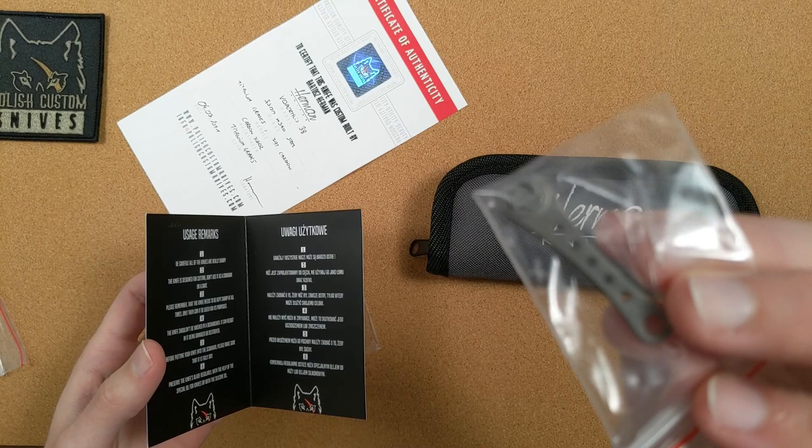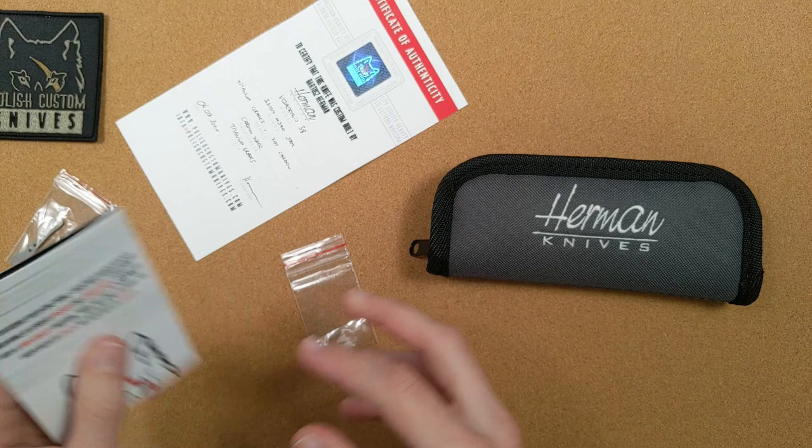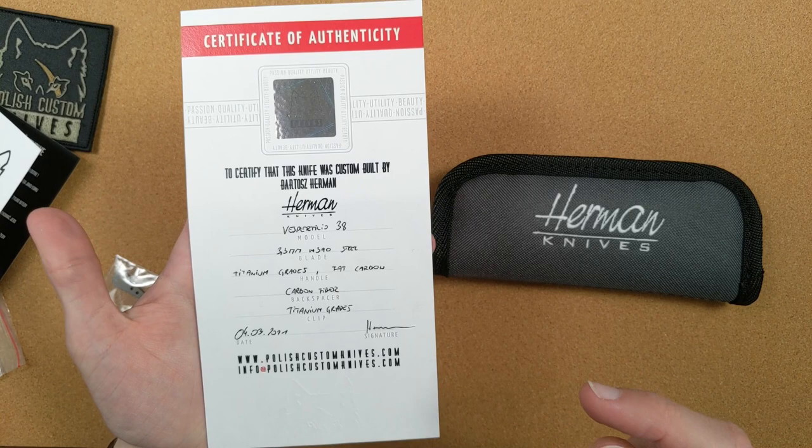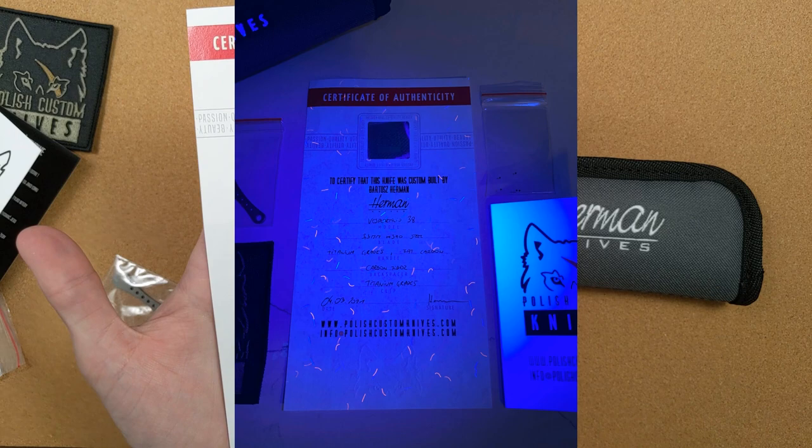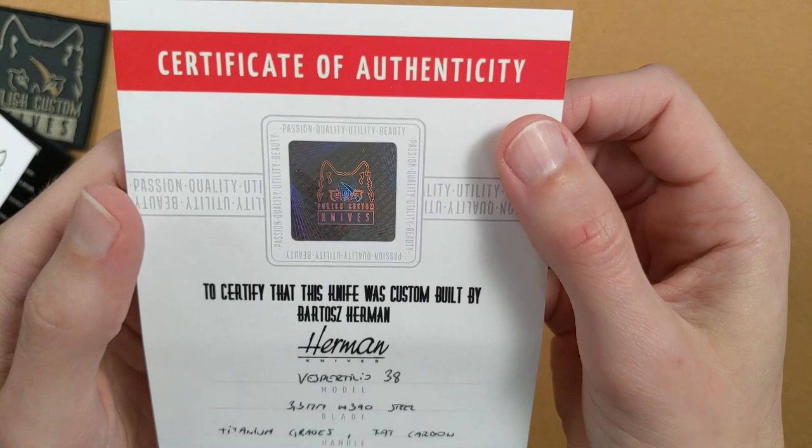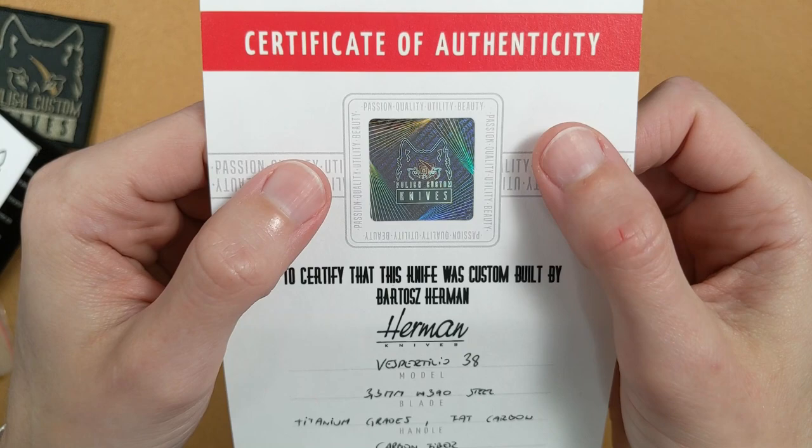This is pretty cool. This is a certificate of authenticity and what makes it cool is that if you shine a black light on this, it has specific threads that glow different ways and that's like a proof that this is the real and authentic one. Just look at that, that is so freaking cool. Polish Custom Knives, you are doing a fantastic job with your overall branding and paraphernalia.